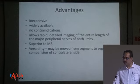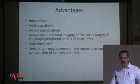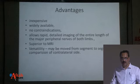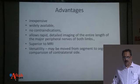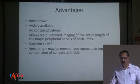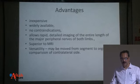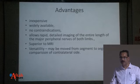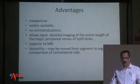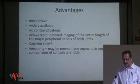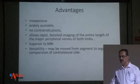Ultrasound has significant advantages: it is inexpensive, widely available, has no contraindications, and can be performed on all patients. It allows rapid and detailed imaging of the entire length of major peripheral nerves with bilateral comparison. It is superior to MRI because of its dynamic nature and versatility — it can be moved from segment to segment — and contralateral side comparison is always possible, which may not be feasible on MRI.